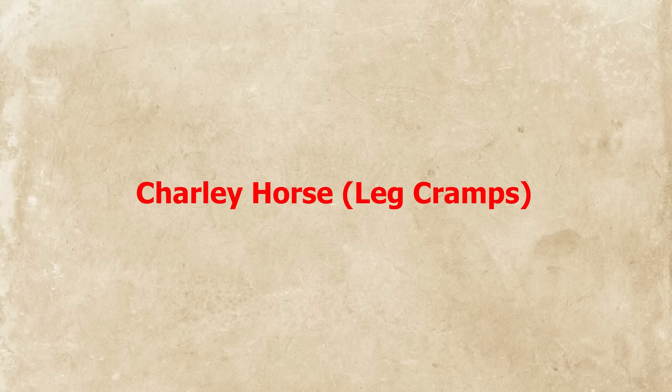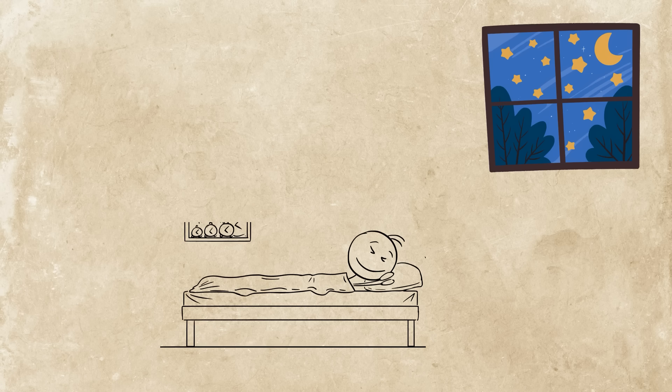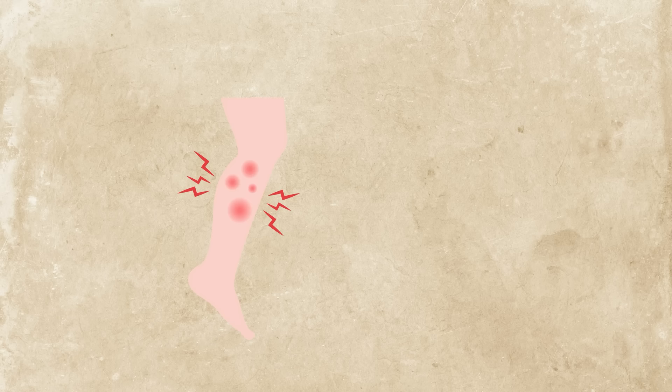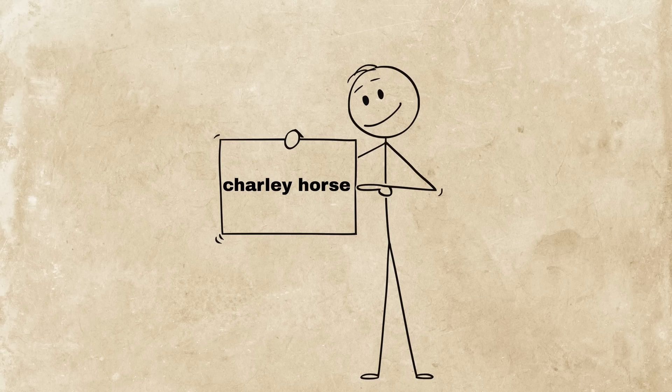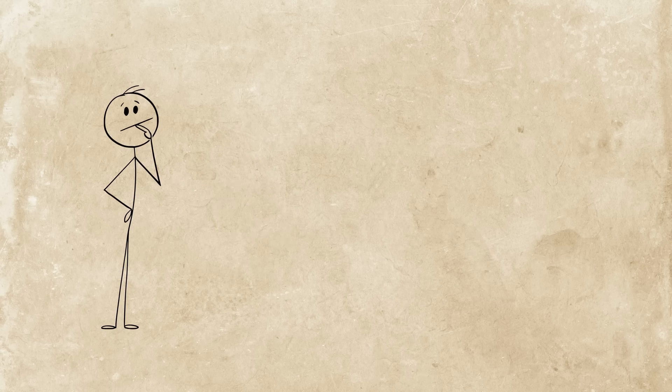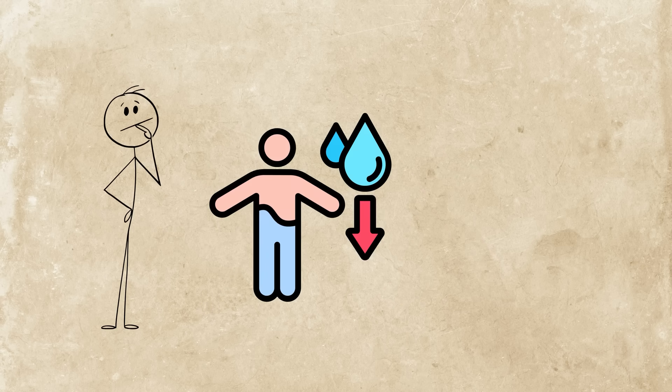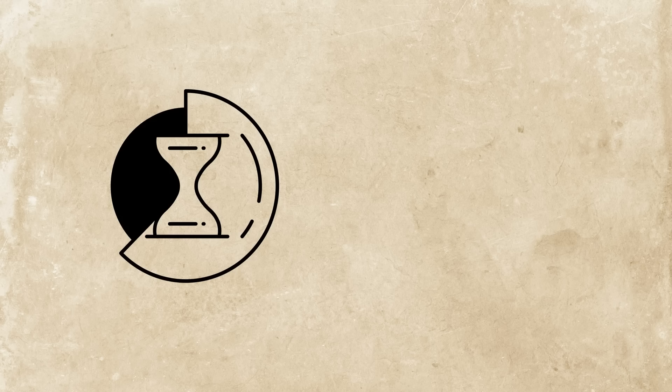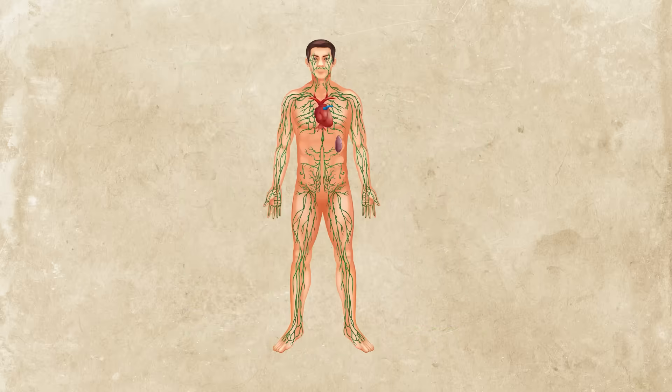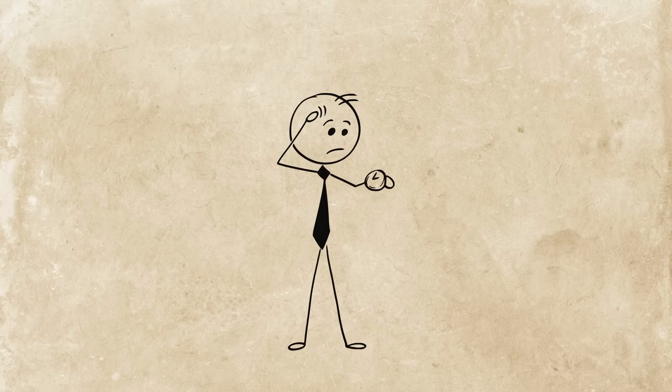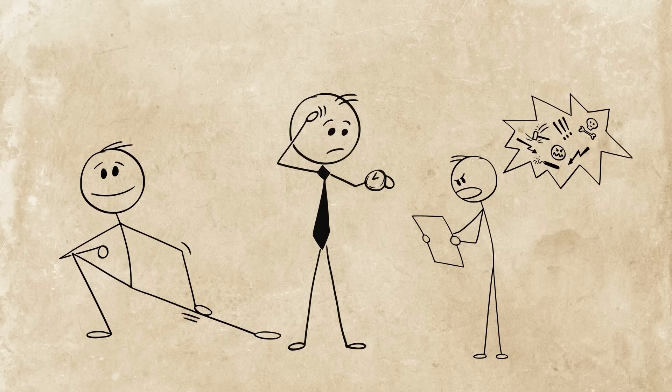Charlie horse. Leg cramps. Middle of the night, you stretch, and suddenly your calf feels like it's being twisted by an invisible wrench. That's a charley horse. It's a sudden involuntary muscle cramp, often in the legs. It can be caused by dehydration, electrolyte imbalances, or overuse. But sometimes it just happens. Your muscle fires and refuses to relax. It's like your body's communication system glitched and locked a command in place. All you can do is wait it out, stretch it, and maybe curse a little.